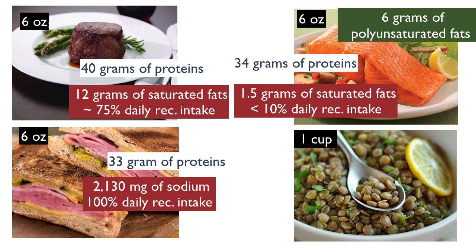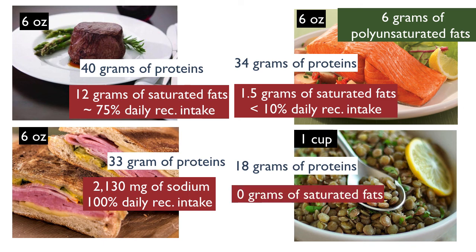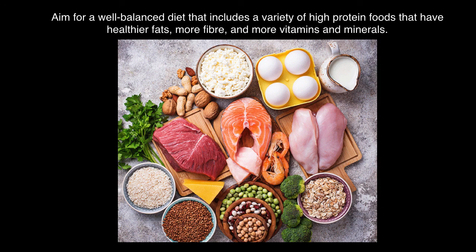When looking at lentils as a fully vegetarian alternative, one cup has only about 18 grams of protein, so you would have to combine it with something else — which you would do anyway to complete the protein. But along with that, it has 0 grams of saturated fats and 15 grams of fiber, which is amazing as a fiber source. To summarize, if we want to make healthier food choices when it comes to protein, we should get a variety of high-protein foods to complete our proteins, and choose those with healthier fats, more fiber, and more vitamins and minerals.